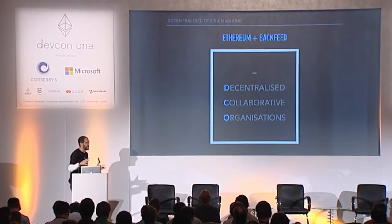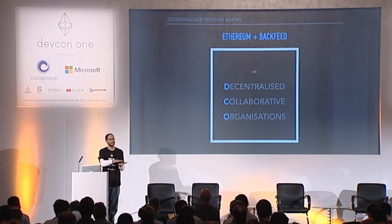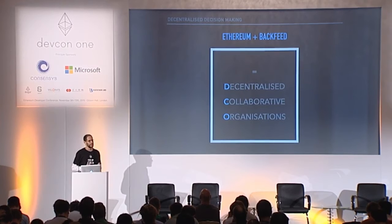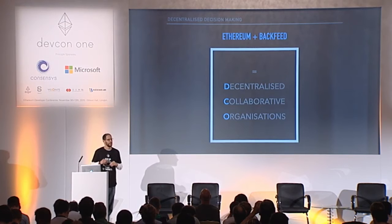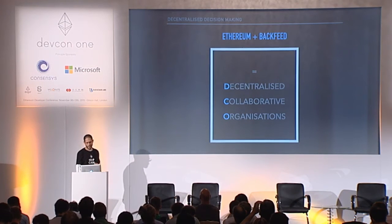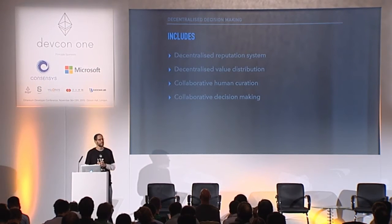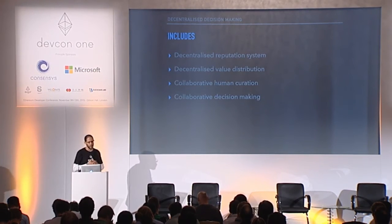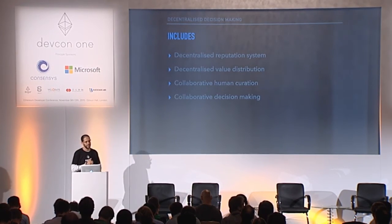The most powerful thing happens when you put them together — you get what we call a decentralized collaborative organization. This is the true decentralized network we have in mind: distributed geographically, but also with completely distributed governance. What this kind of machinery includes: a decentralized reputation system, distributed value distribution, collaborative human curation — deciding what is better or worse — and collaborative decision-making.